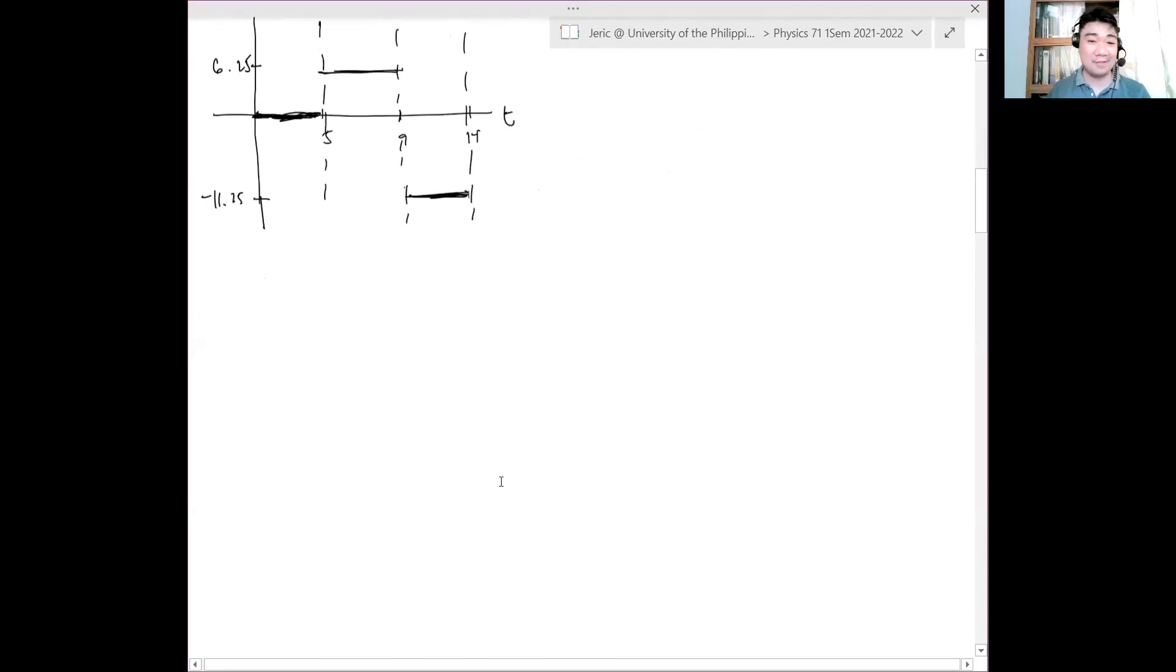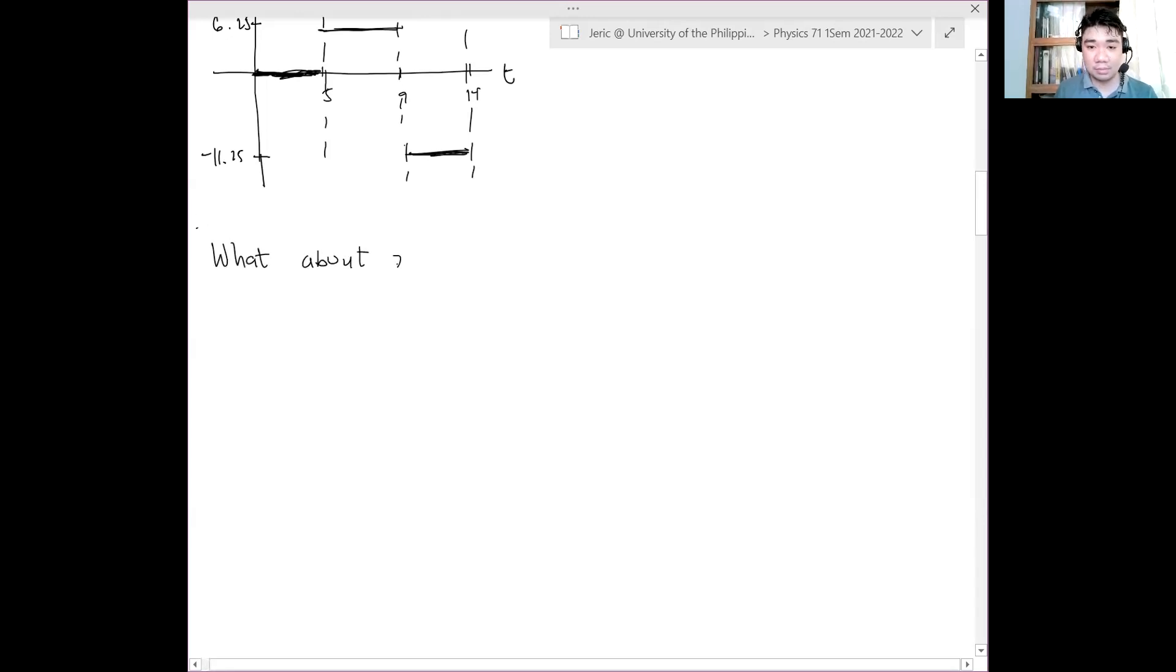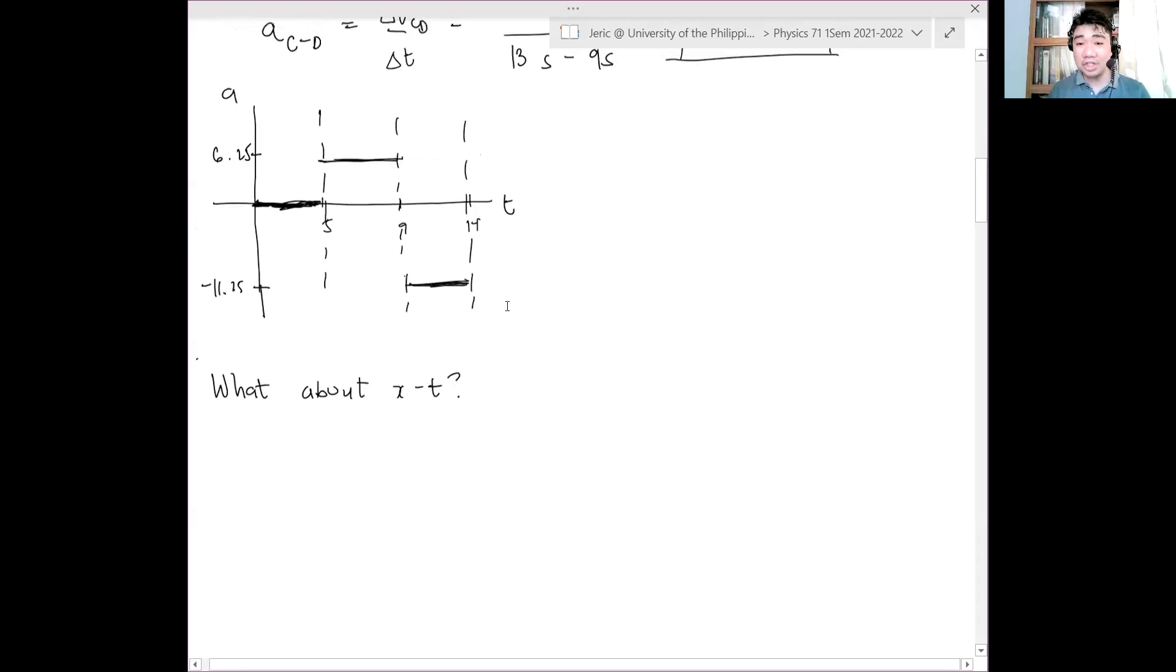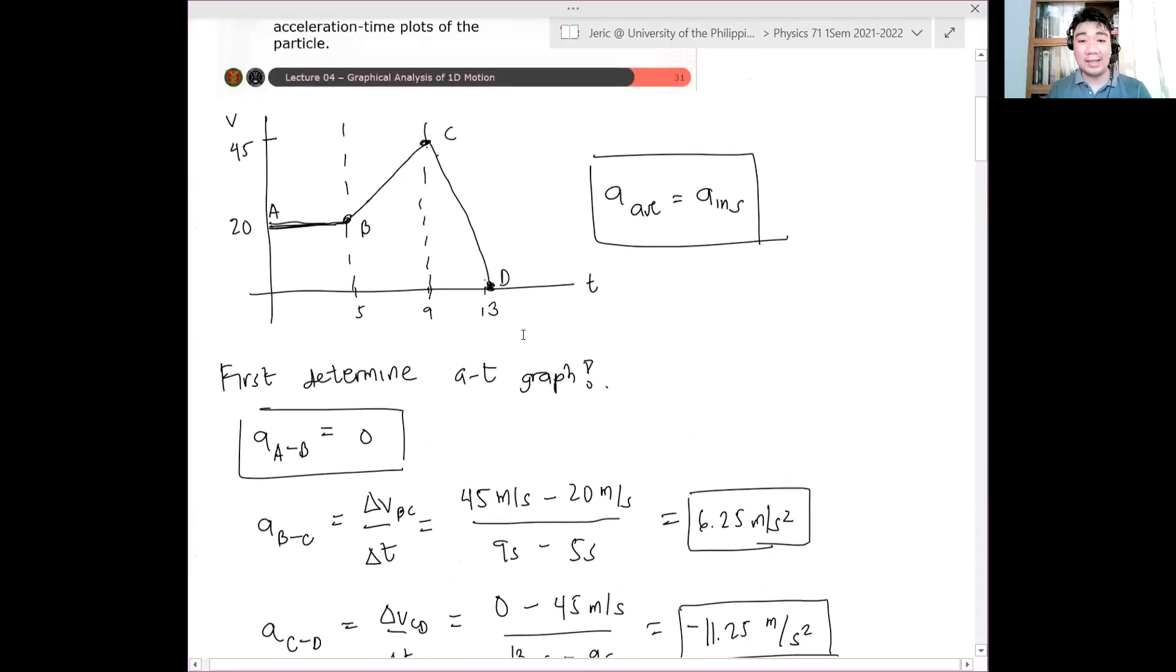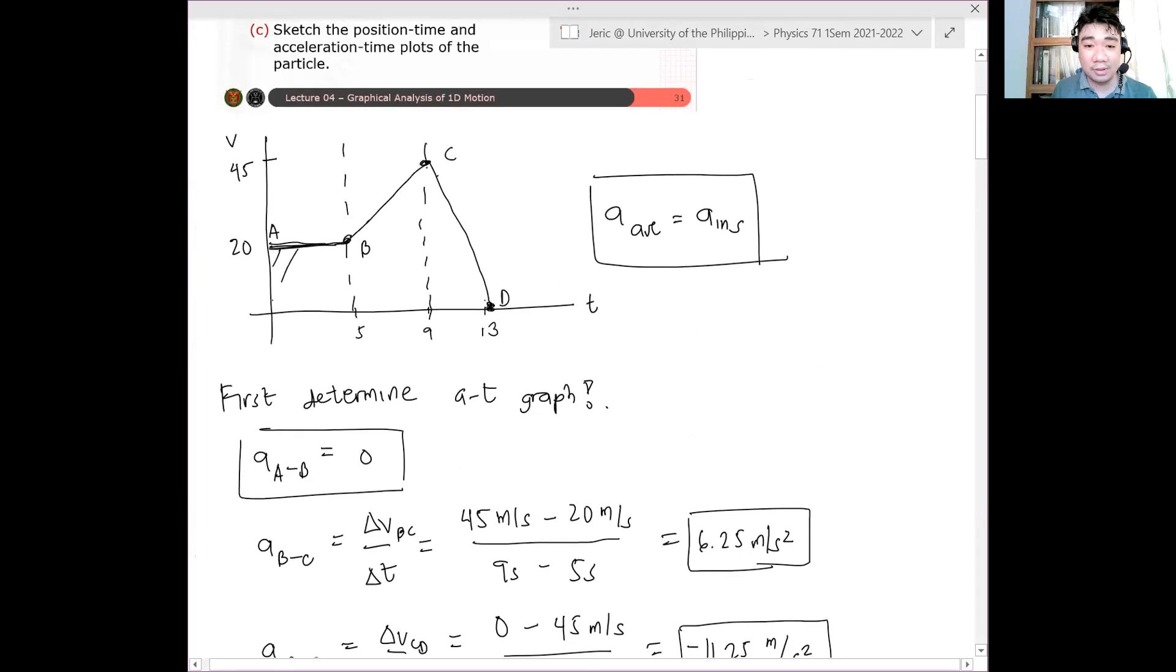Now, what about position-time? This is the interesting part. I might go overtime, so for those who have classes after, you may go. This is part of the recording. I just want to show you how to plot a position-time from the velocity-time. For the position-time, as I said, the position is the area under the curve. Find the area under the curve in these uniform regions.